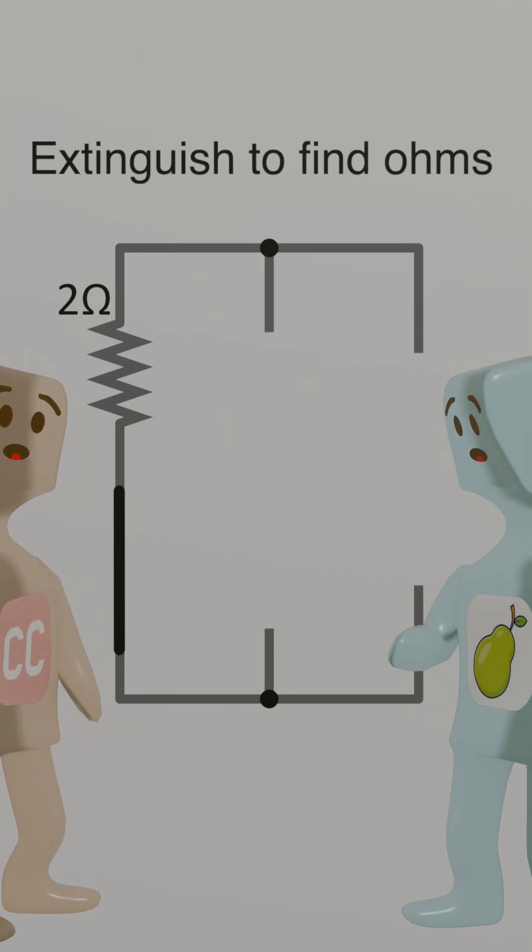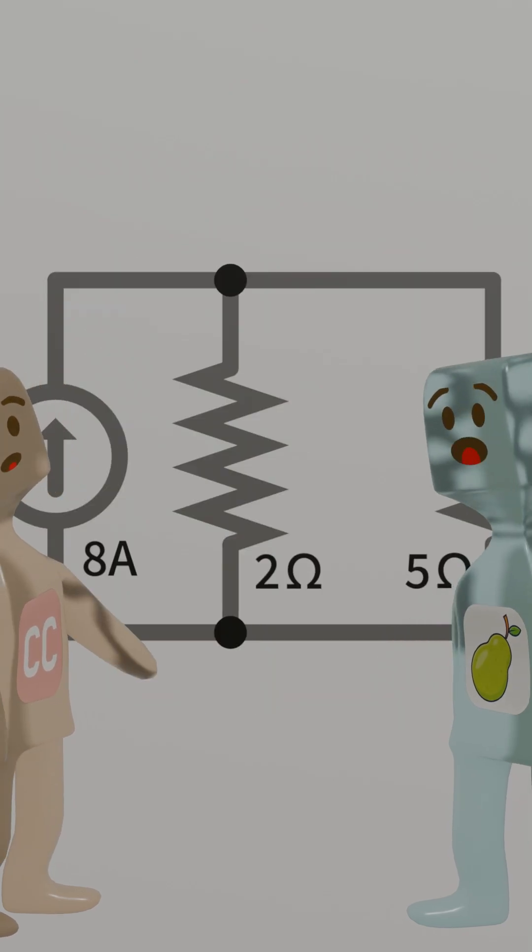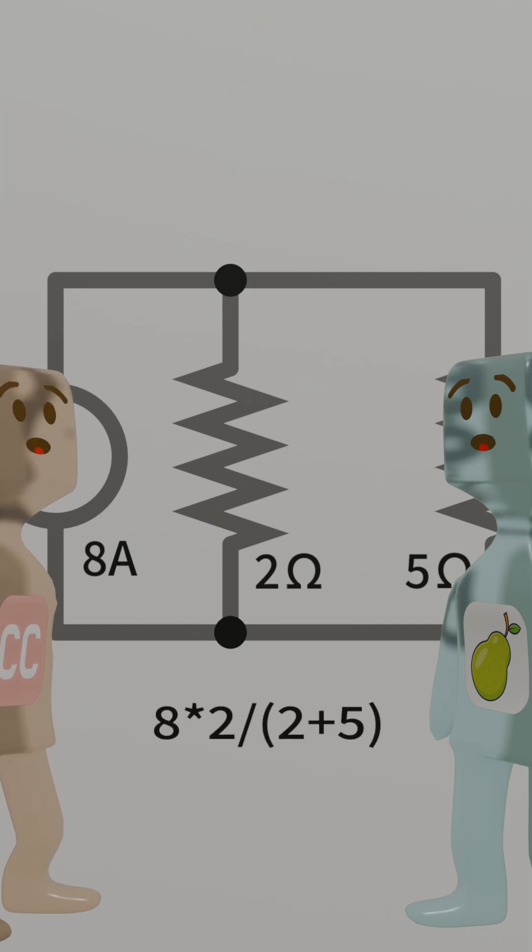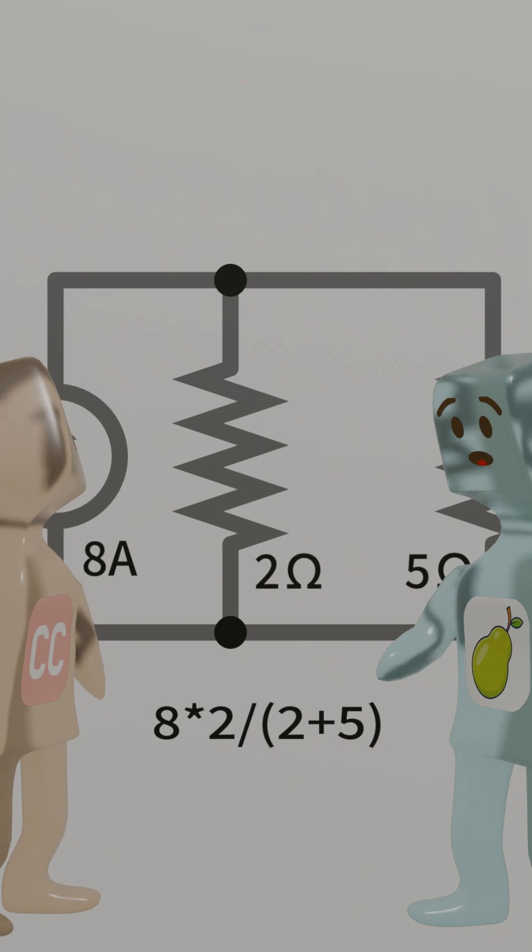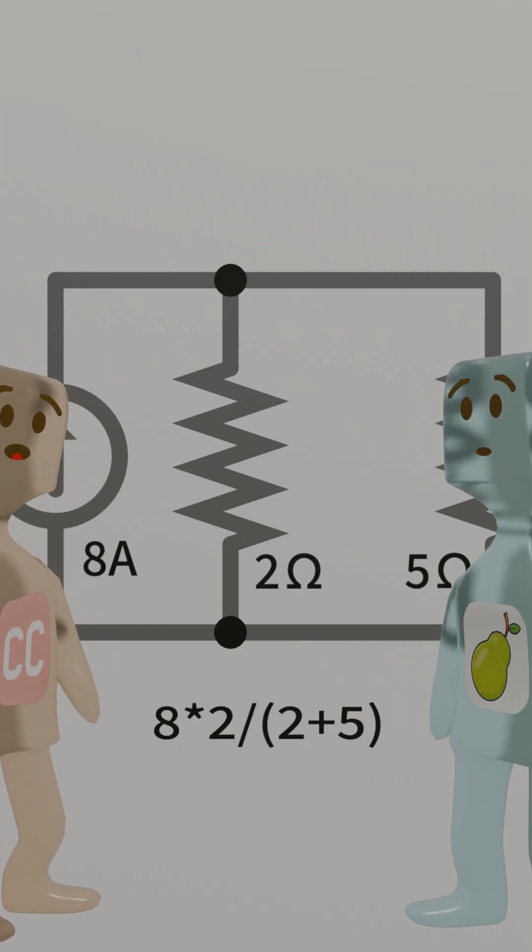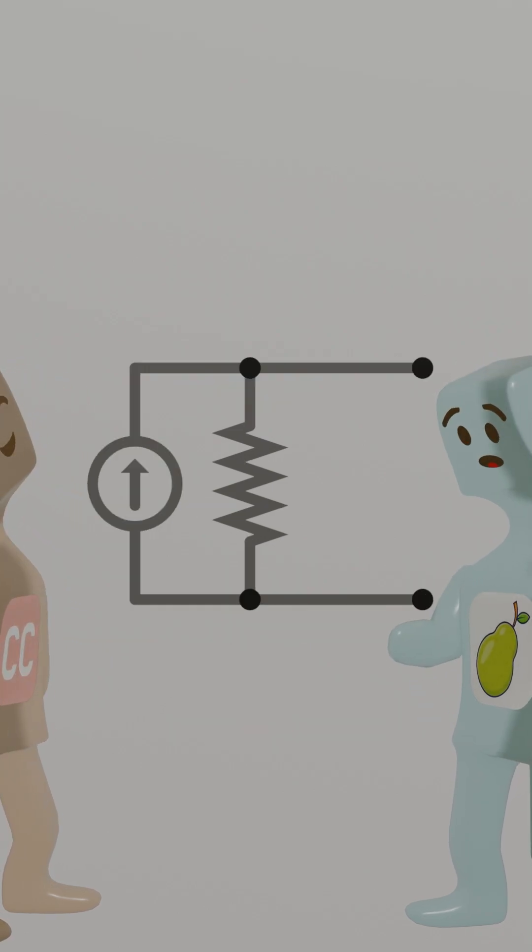Done deal. Want the current through the 5-ohm load? Current divider rule. 8 amps times 2 divided by 2 plus 5. Roughly 2.29 amps. Oh my god, that is way faster than calculating VTH. Just remember, it only works for linear circuits.